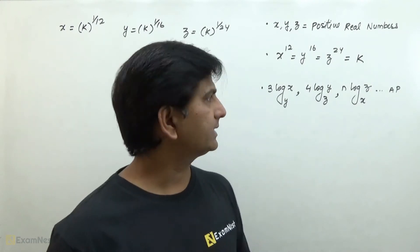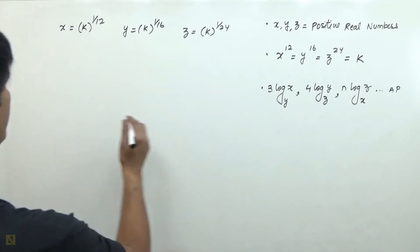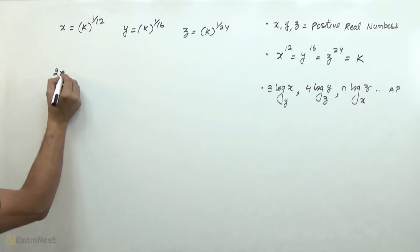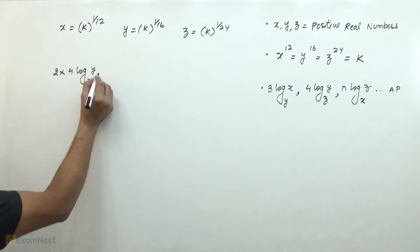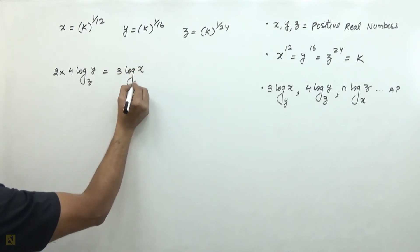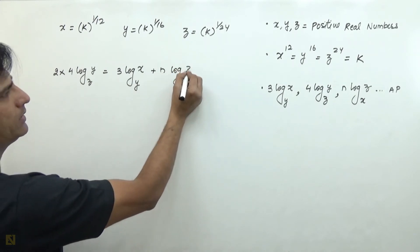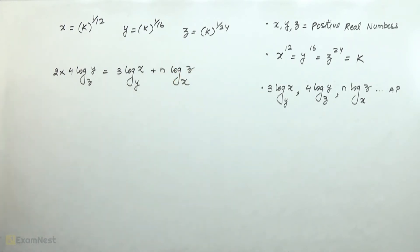So here we will say that two times four log y to the base z is equal to three times log x to the base y plus n into log z to the base x.